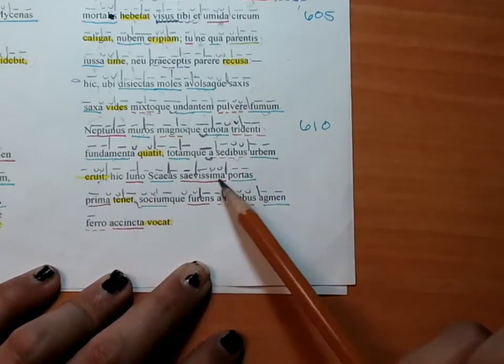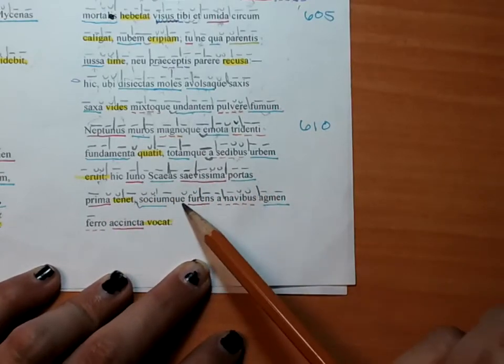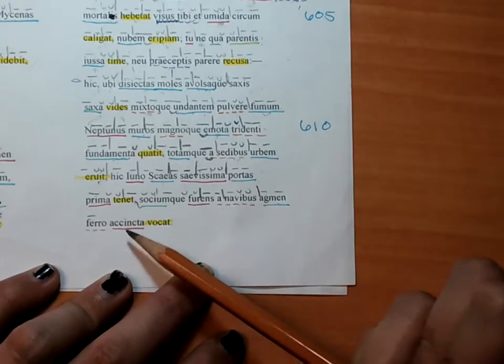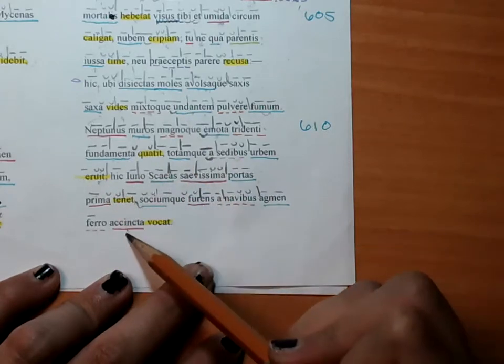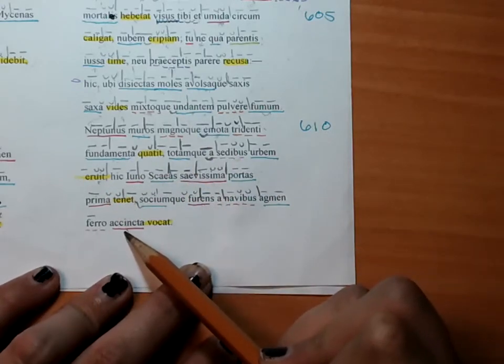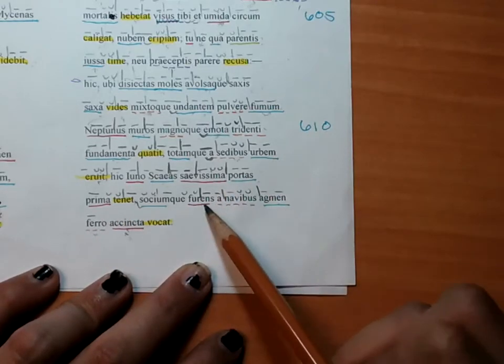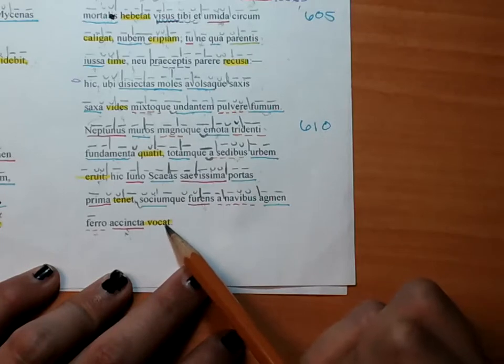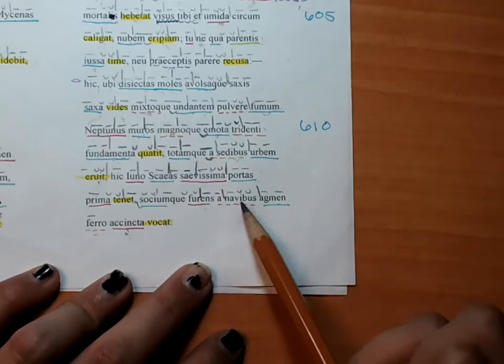Here, most savage Juno first holds the Skian gates. And having been girt by steel or encircled or armored by steel, she, comma, raging summons her allied battle line from the ships.